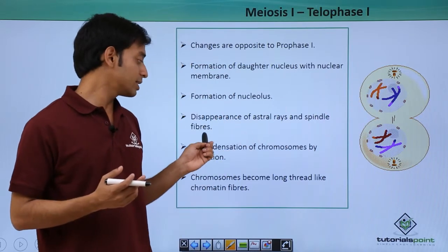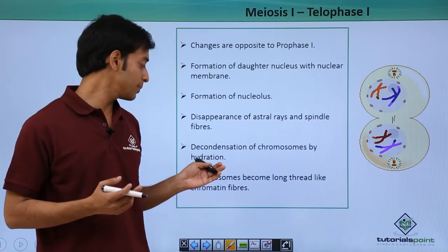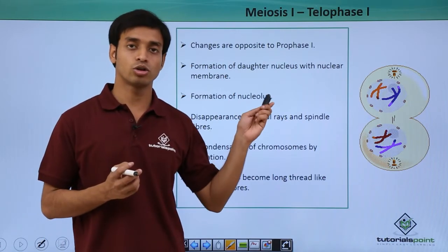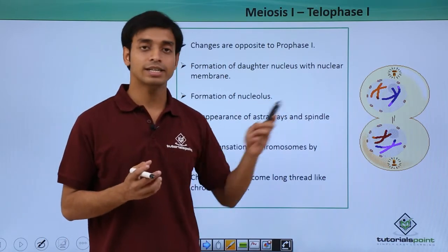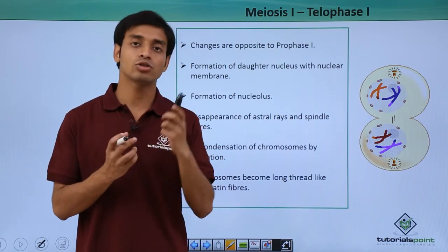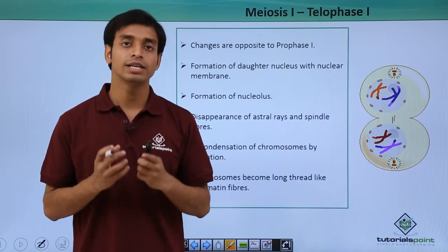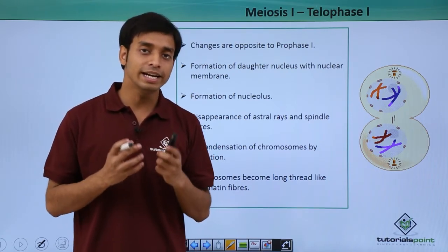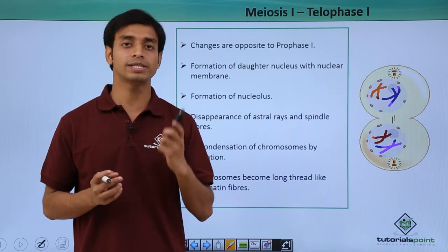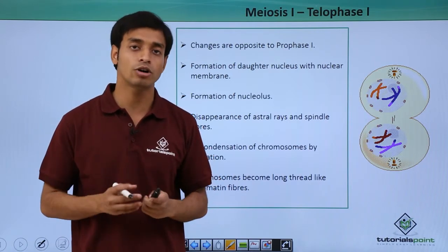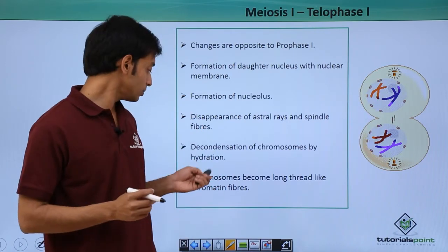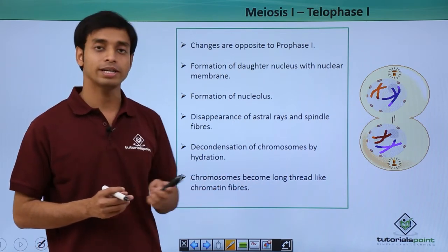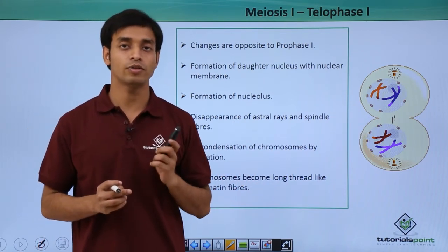Now what happens is the decondensation of the chromosomes by hydration. Water is added into the chromosomal structures and they start decondensing. From proper chromosomal structures they get reversed back to a DNA network-like structure, and the chromosomes become long thread-like chromatin fibers, as we have already discussed.